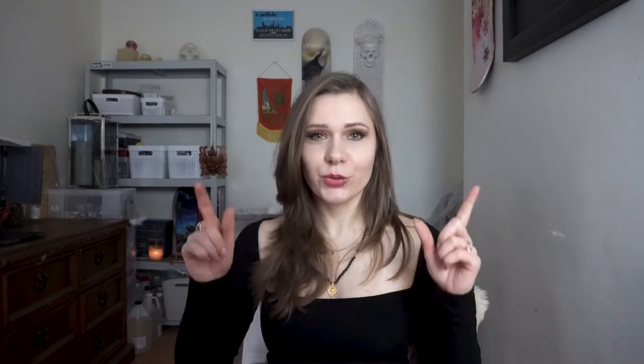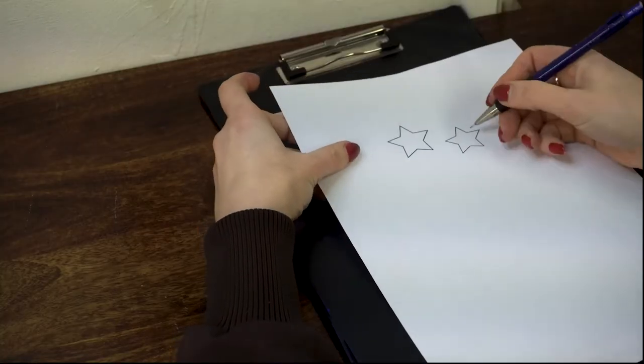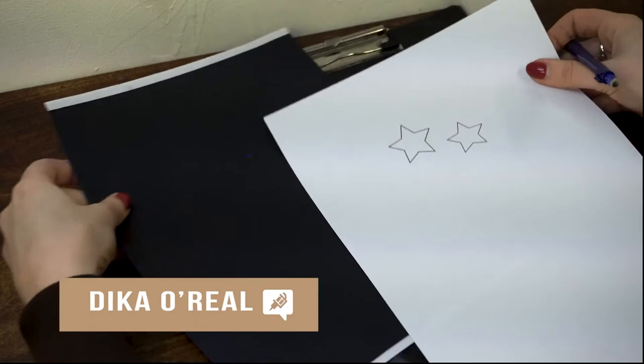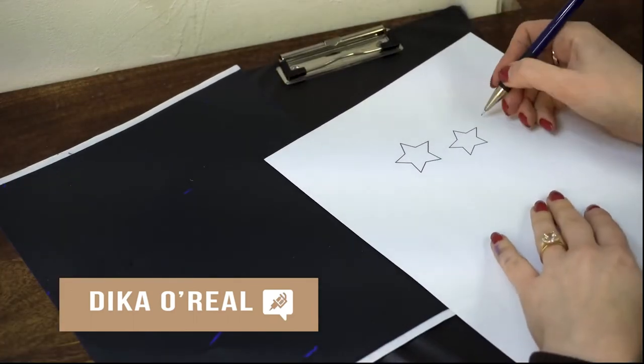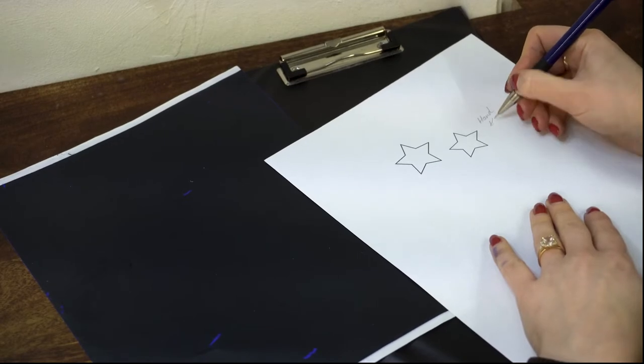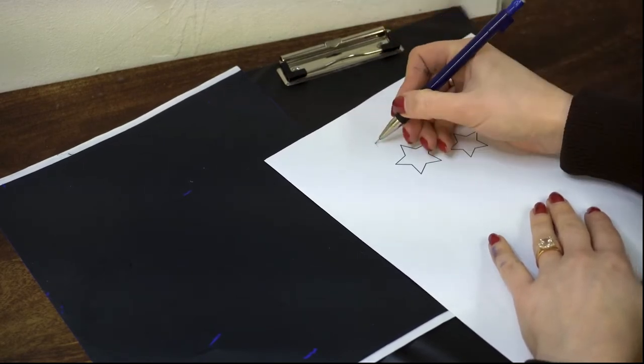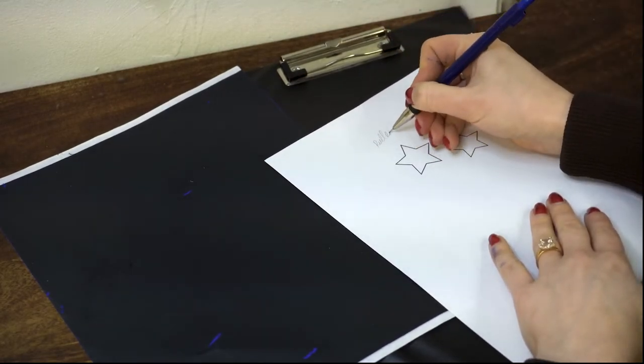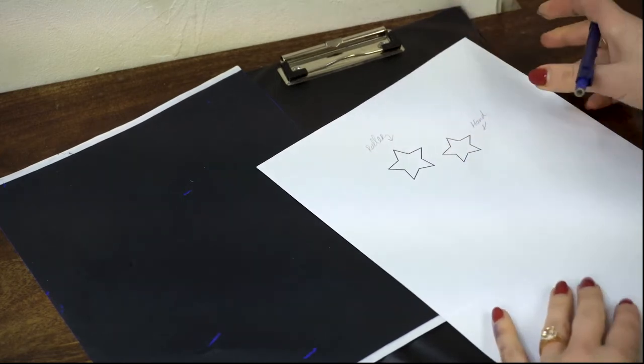I've printed out two stars to show you how I can stencil one by hand and one with the help of a ruler. Here I'm going to sign which one I've done by hand and which one I used a ruler to help me with.